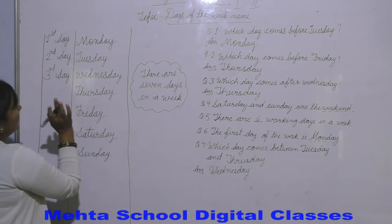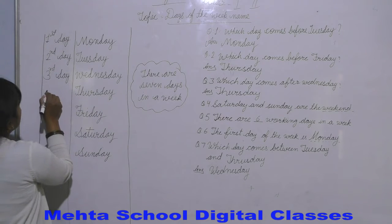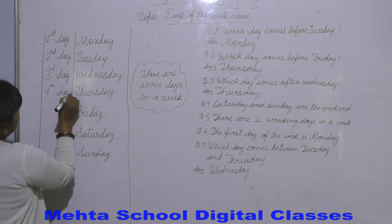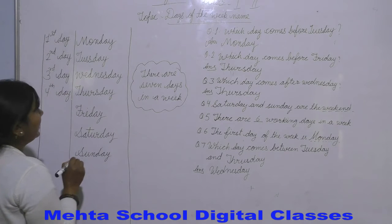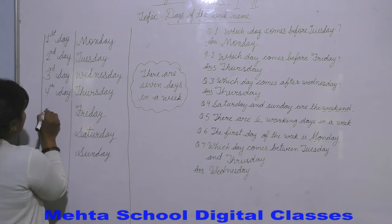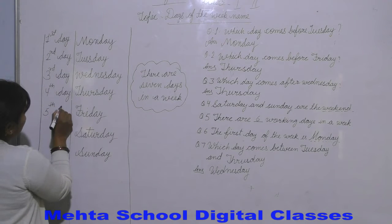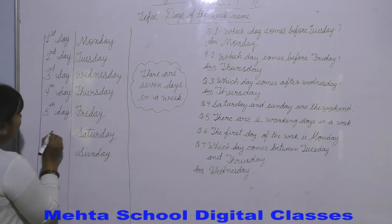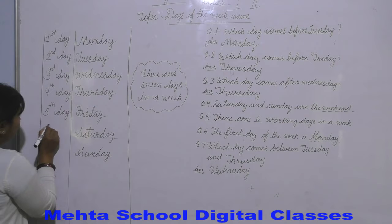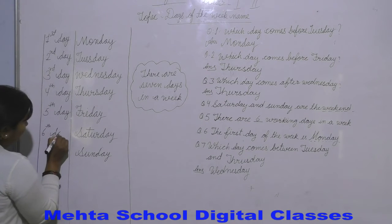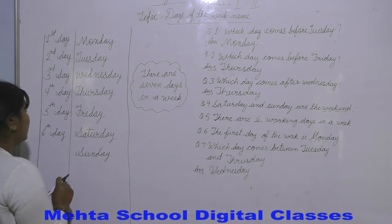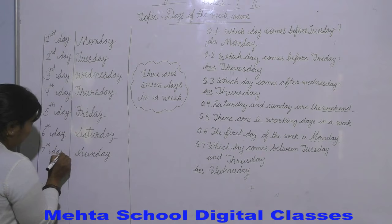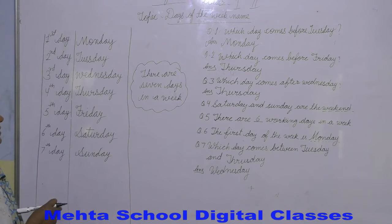Thursday is the fourth day. Friday is the fifth day. Saturday is the sixth day and Sunday is the seventh day. So kitnay days hoi week mein? 7 days.